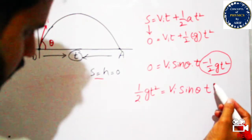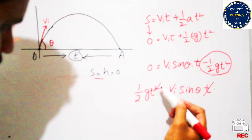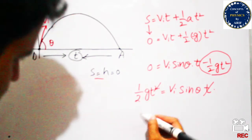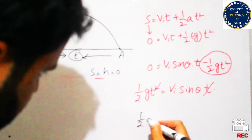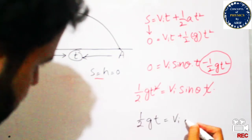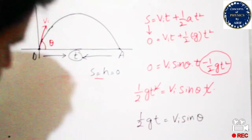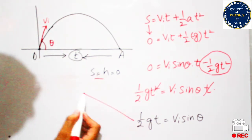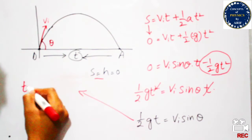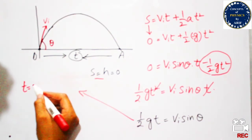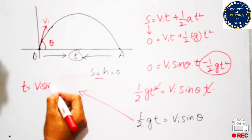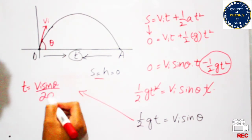If we cancel one factor of t from both sides, we are left with one t: ½g·t = Vi sinθ. So we can easily calculate the time from this expression. Time of flight T = 2·Vi sinθ / g.